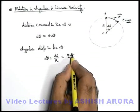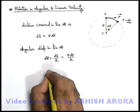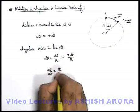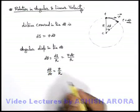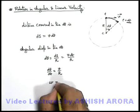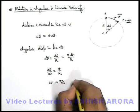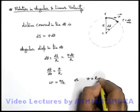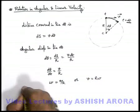And here if we take dt on the other side, it'll become dθ by dt is equal to v by R. And this dθ by dt we can simply write as the angular speed ω. This is equal to v by R, or we can write linear velocity can be written as Rω, where ω is the angular velocity.